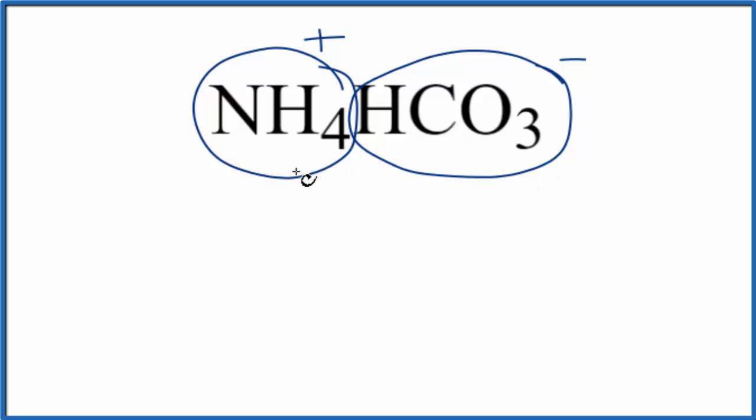So we have our ammonium bicarbonate. It's two ions, so this is an ionic compound. The positive and the negative ions are attracted to each other.